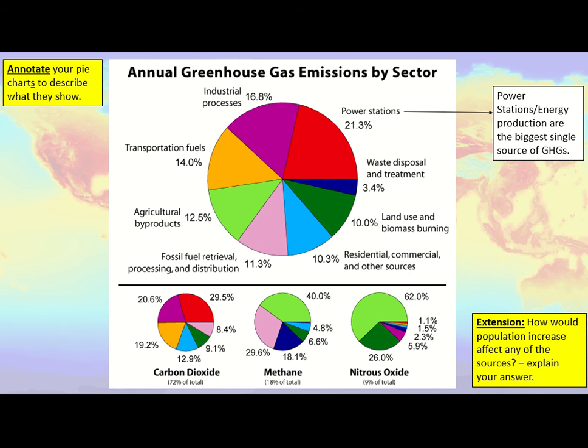Don't just look at the colours — look at the percentages too. Examine the three pie charts at the bottom and consider what they tell you. Once you've done that after five minutes, there is an extension in the bottom right which asks you to think about how population increase could affect any one of those sources. Pause the screen while you're working, then unpause when you're ready.